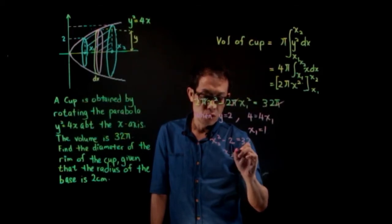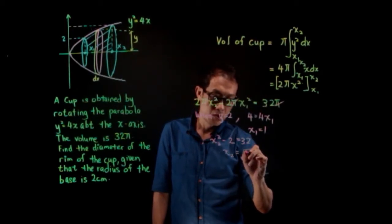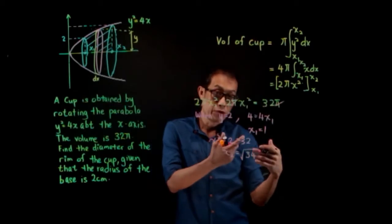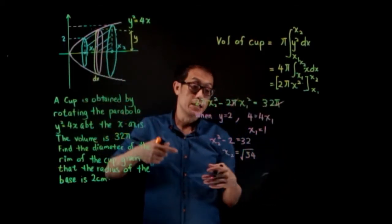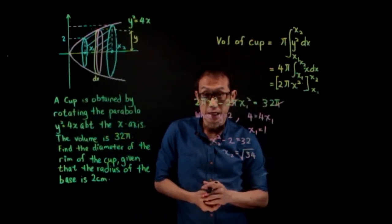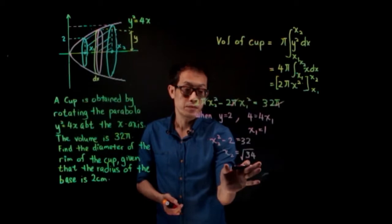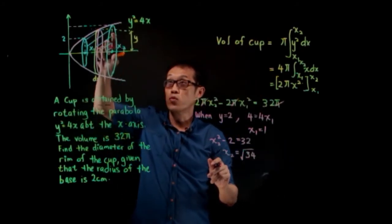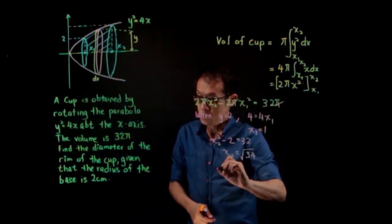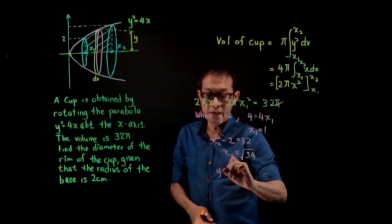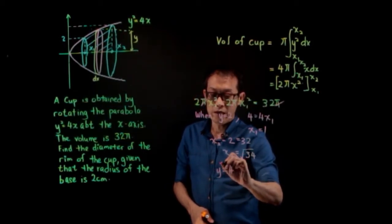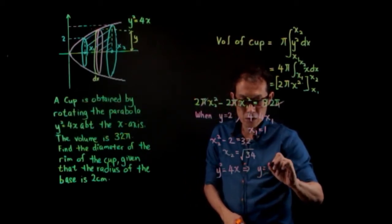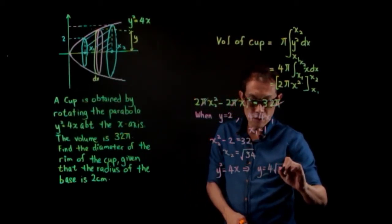So x2 = √34. We reject the negative square root because x represents a distance — a length — and cannot be negative. Now, what is y at x2? From y² = 4x, we get y² = 4√34.